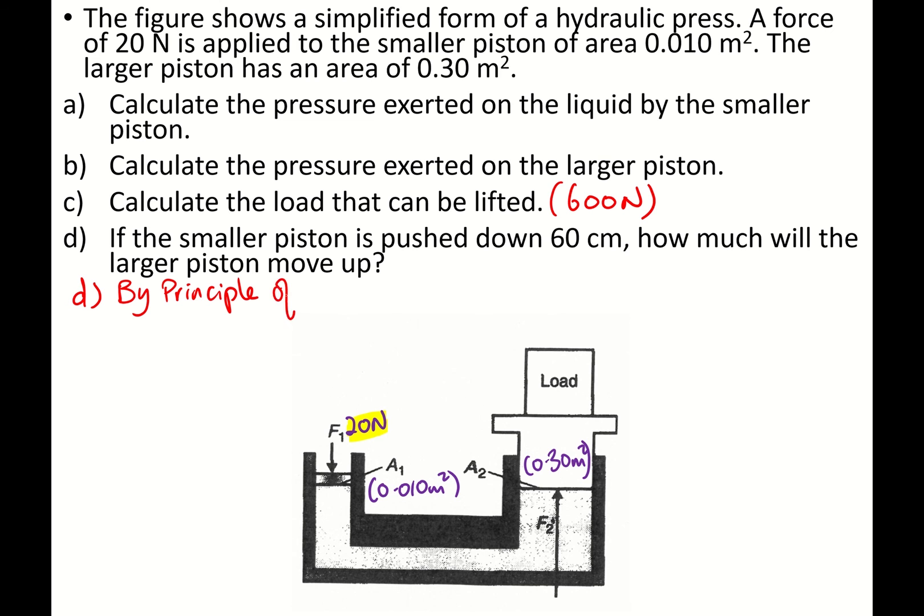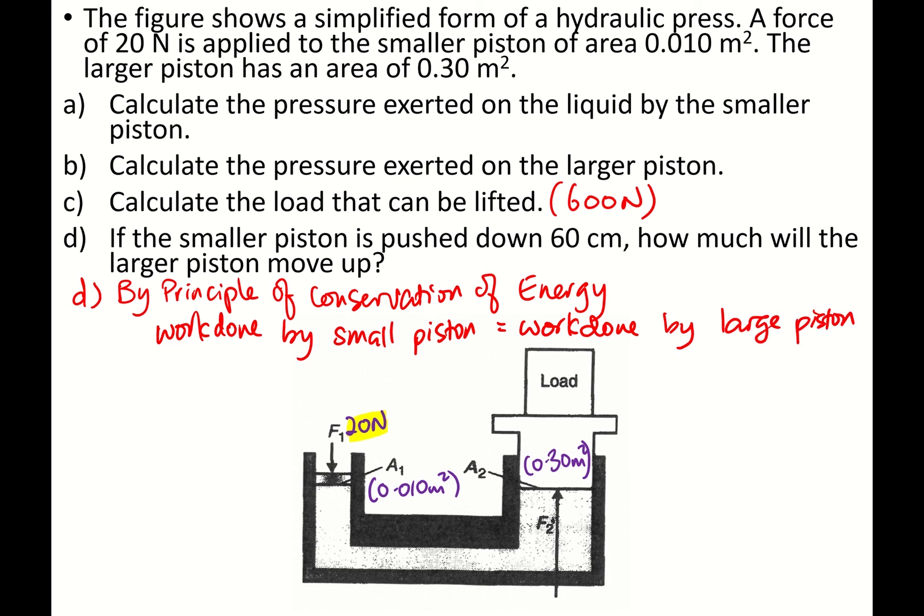By principle of conservation of energy, work done by small piston equals work done by large piston. So work done by small piston: F₁D₁. Large piston would be F₂D₂. Now the smaller piston is pushed down 60 cm.